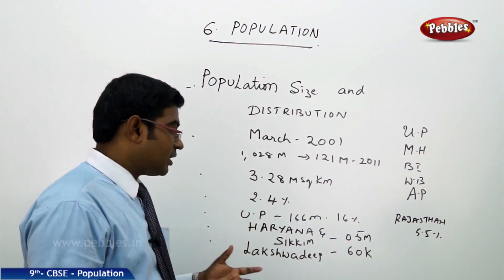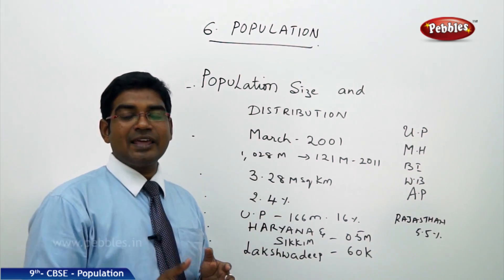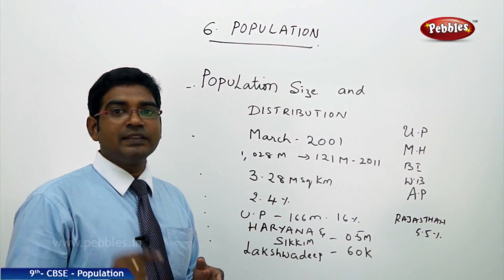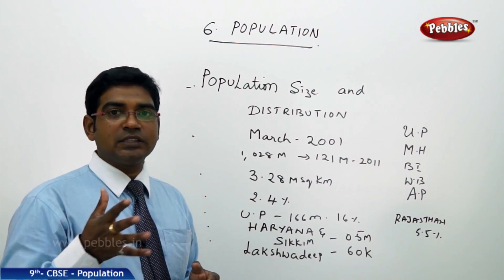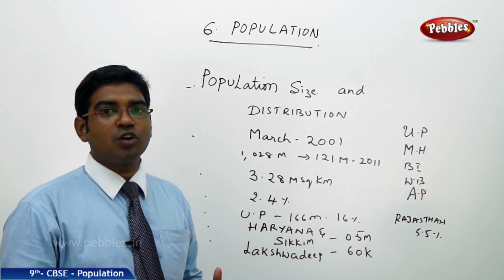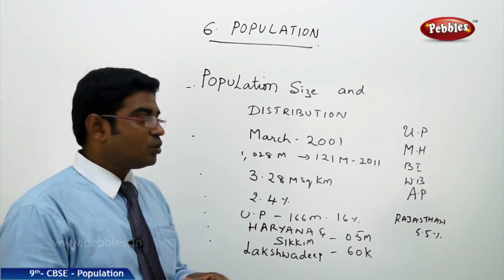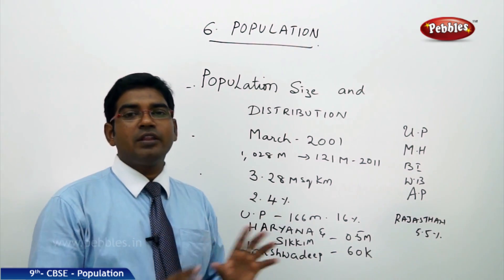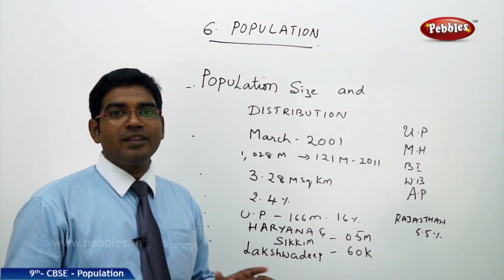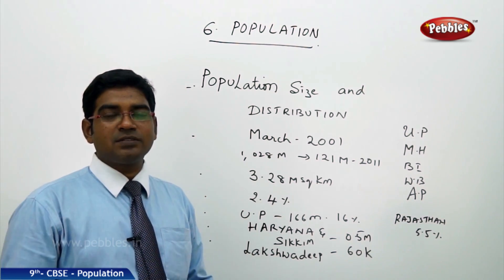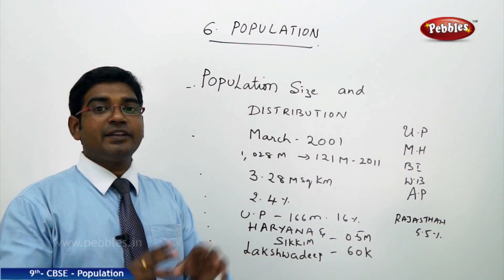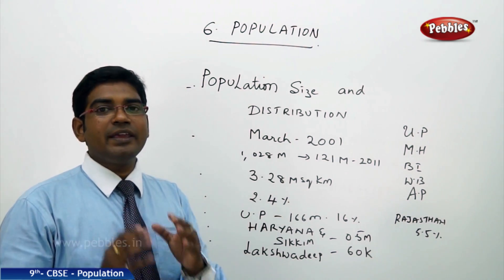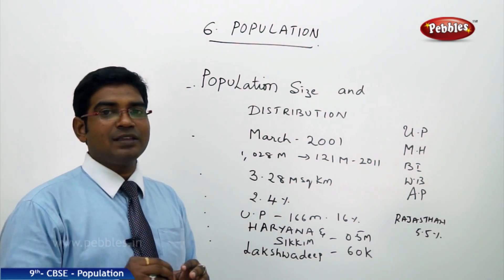When it comes to Lakshadweep, we have less than a lakh — actually just 60,000 people staying on those islands. So the population is not at all equally distributed; it varies from place to place, region to region.